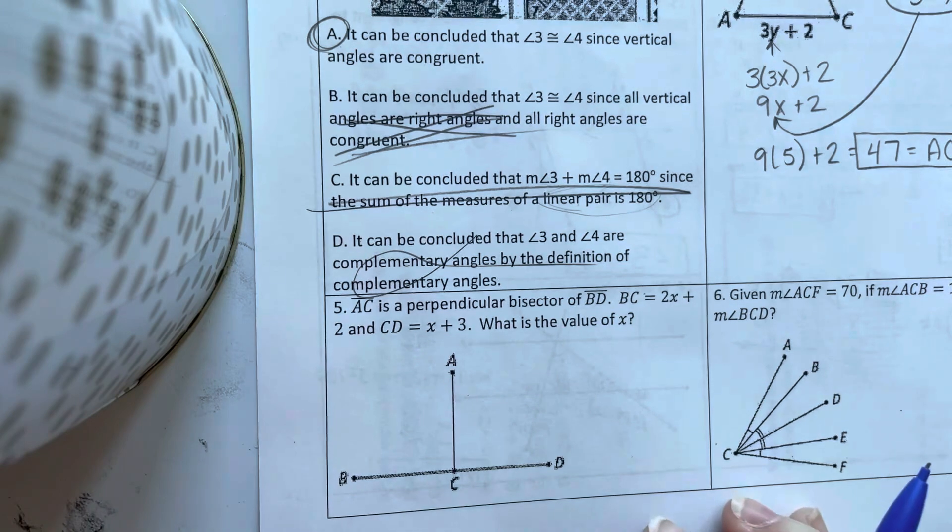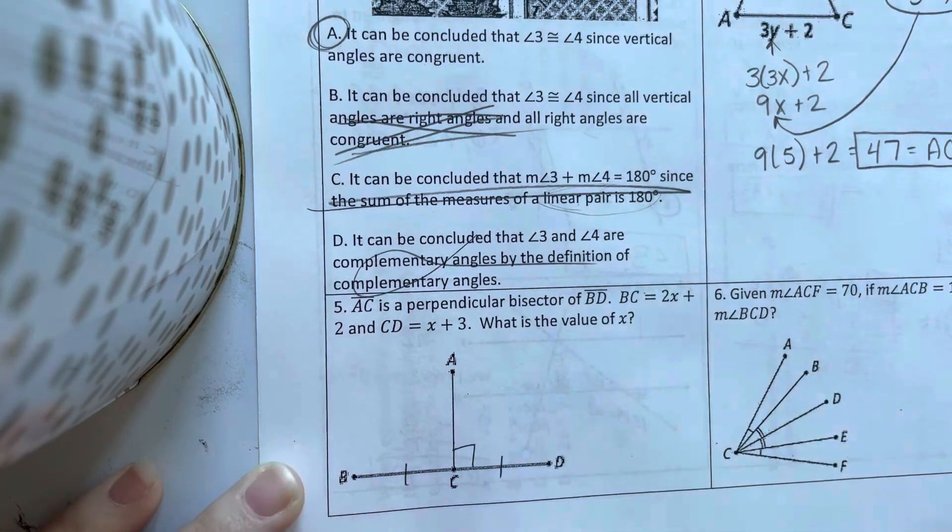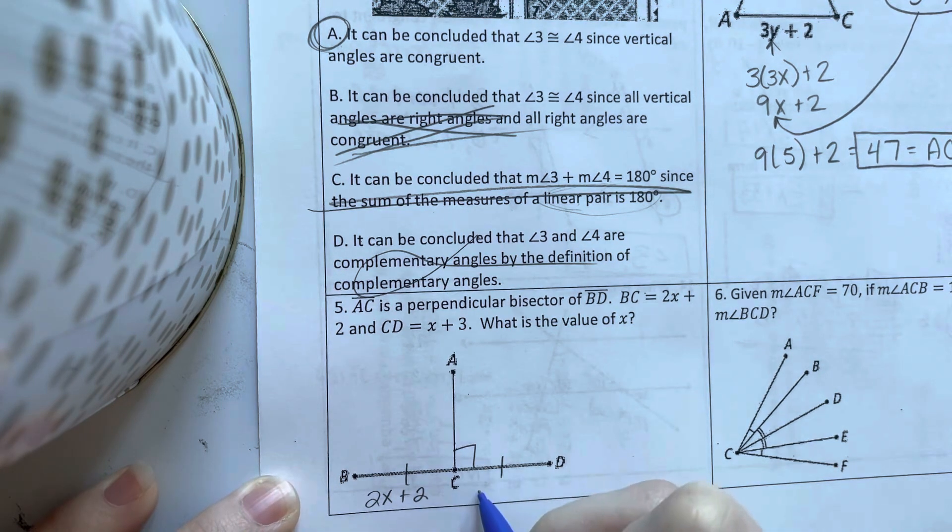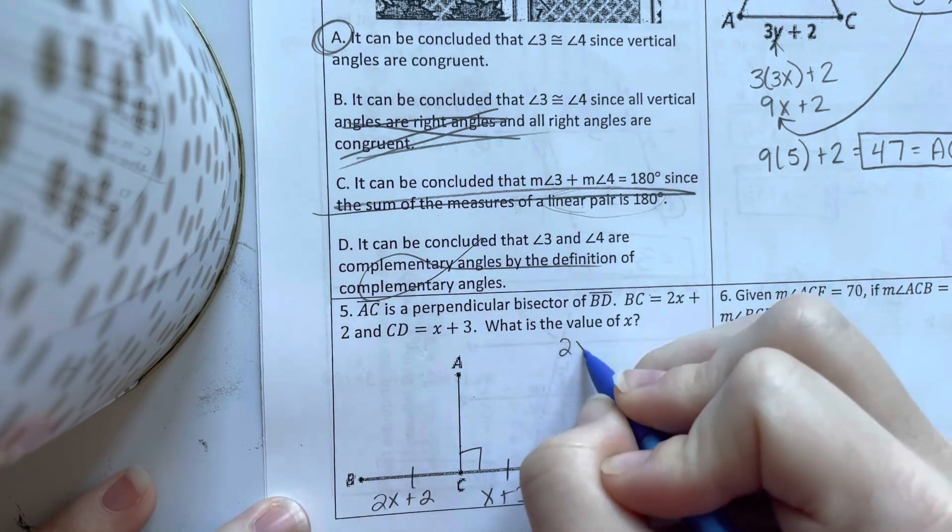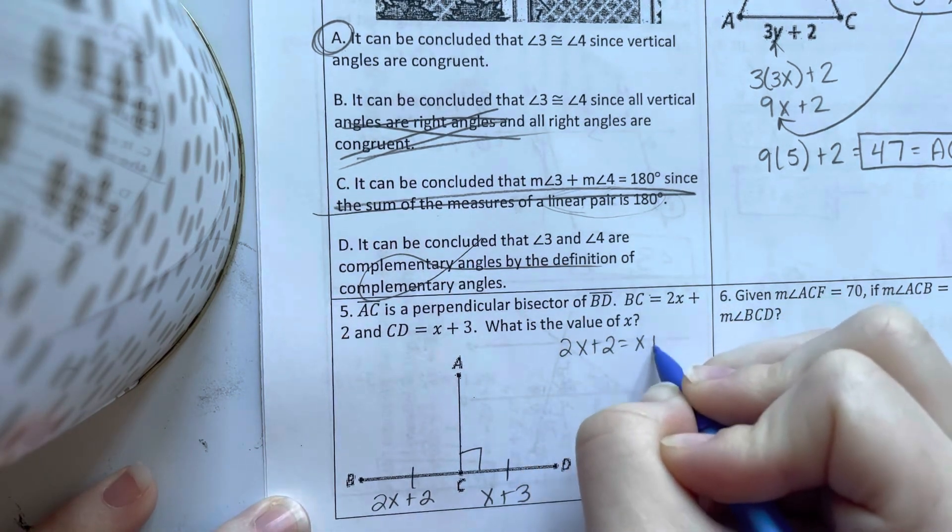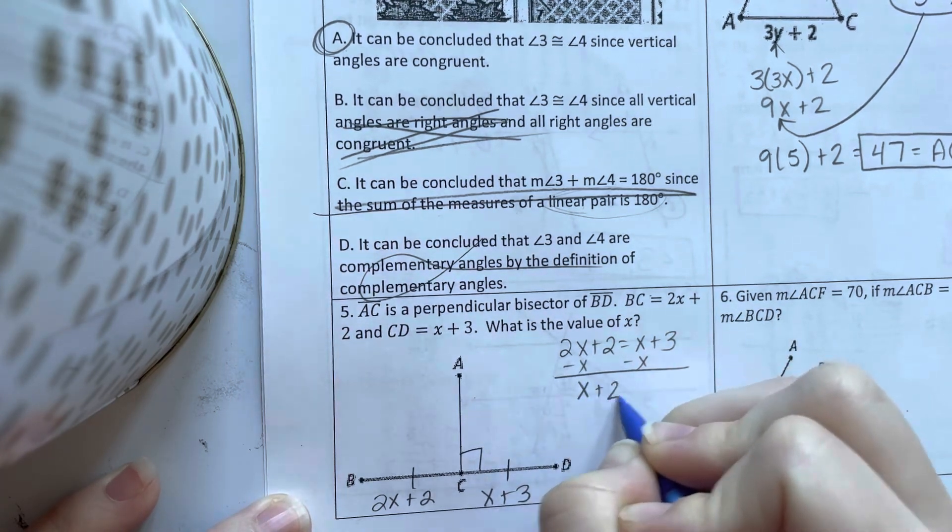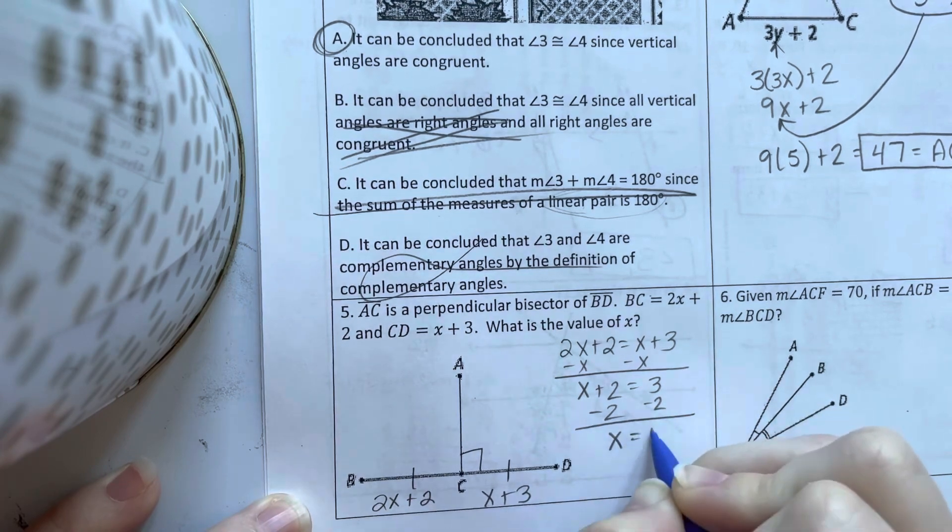Number 5, AC is the perpendicular bisector of BD. If BC is 2X plus 2 and CD is X plus 3, what is the value of X? Well, congruent parts we set equal. Subtract X, X plus 2 equals 3. Subtract 2, X equals 1.